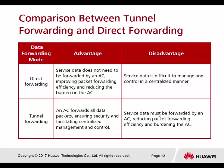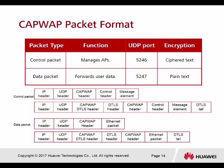There are two different packet formats: the control packet and the data packet. Data packets belong to the user for network access, while control packets are used by the AP. Both use different UDP port numbers — UDP port 5246 is for control packets and UDP port 5247 is for data packets.